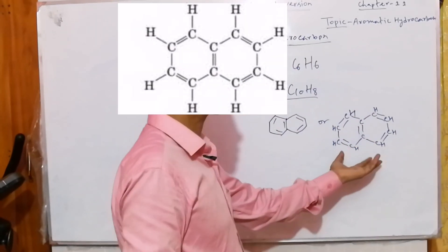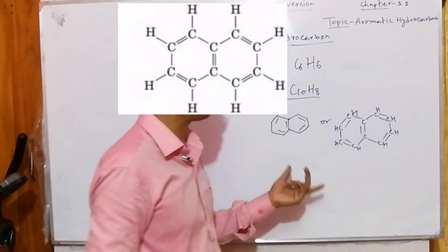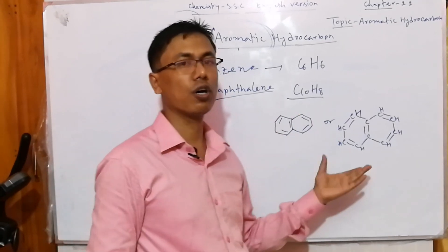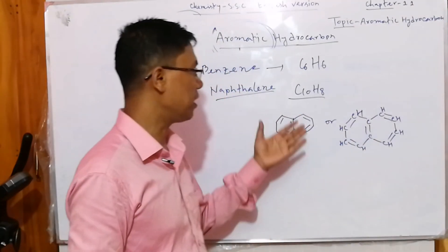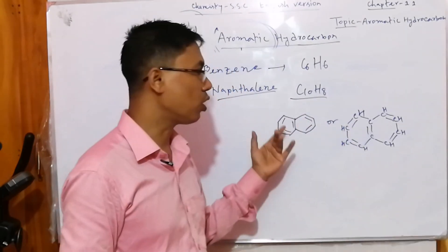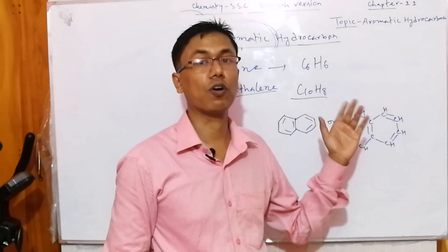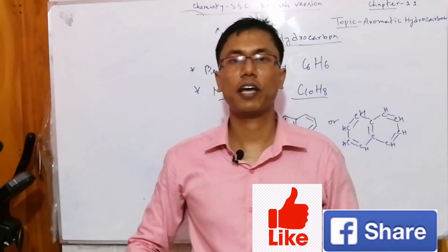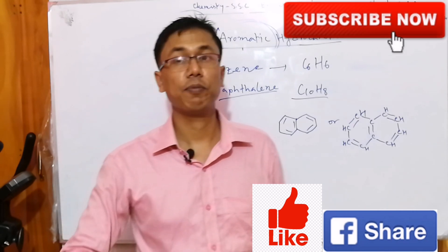This is another structure of naphthalene. So you can say that in both of these compounds, it has an alternative double bond and also it is a planar cyclic compound. So that's why benzene or naphthalene is an aromatic hydrocarbon.